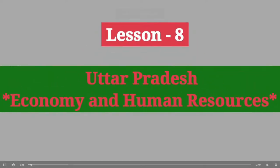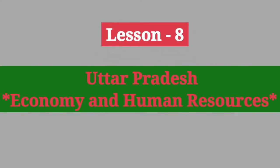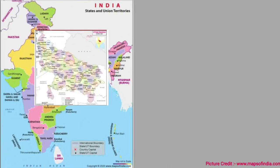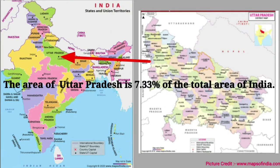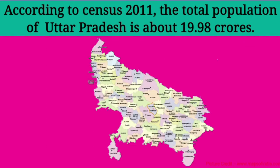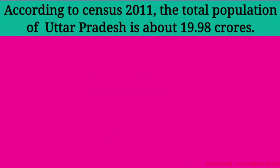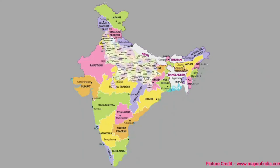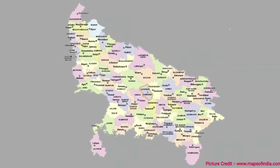Uttar Pradesh Economy and Human Resources. Let us go through the main points of this lesson. The area of UP is 7.33% of the total area of India. According to Census 2011, the total population of Uttar Pradesh is about 19.98 crores.